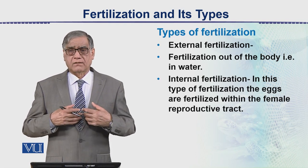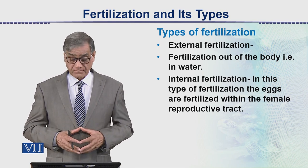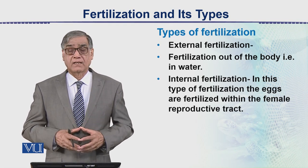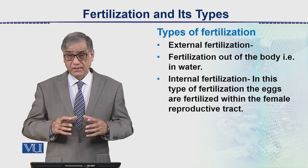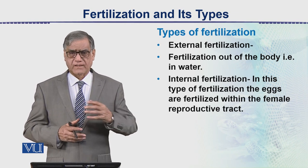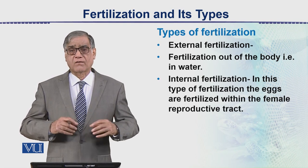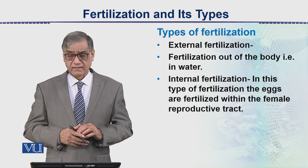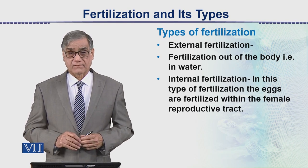Then there is internal fertilization, which commonly occurs in both terrestrial and aquatic animals. In this type of fertilization the eggs are fertilized within the female reproductive tract — sperms are introduced into the female tract where eggs are also present as a result of ovulation, and there is a union of these two gametes and the zygote is formed. These are the types of fertilization.